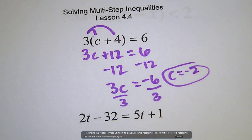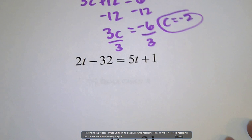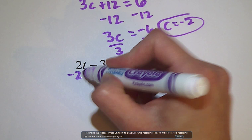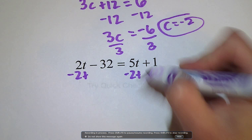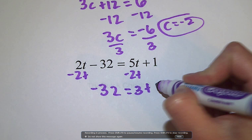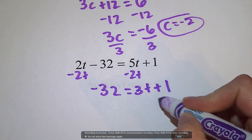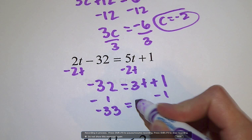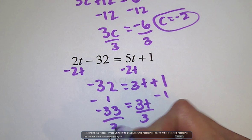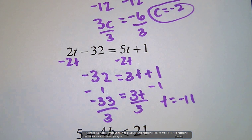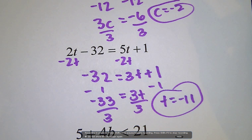On this next one, 2t minus 32 equals 5t plus 1. I would subtract 2t from both sides. I would get negative 32 equals 3t plus 1. I would subtract 1 from both sides and get negative 33 equals 3t, divide by 3, and I would have t equals negative 11 as my answer. So that would just be solving with an equation.